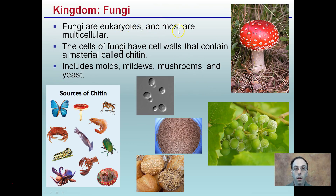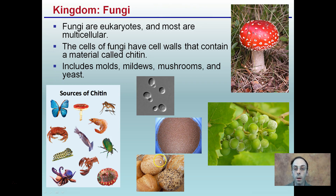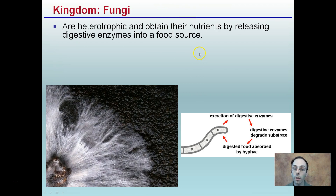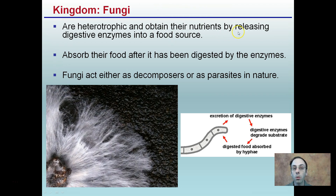Kingdom Fungi: fungi are eukaryotes and most are multicellular. Cells of fungi have cell walls containing a material called chitin — the same hard outer shell found in insects, crabs, lobsters, and shrimp. This includes molds, mildews, mushrooms, and yeast. Yeast causes bread to rise. Fungi are heterotrophs that obtain nutrients by releasing digestive enzymes into a food source and absorbing it after digestion. Fungi act either as decomposers or as parasites in nature.